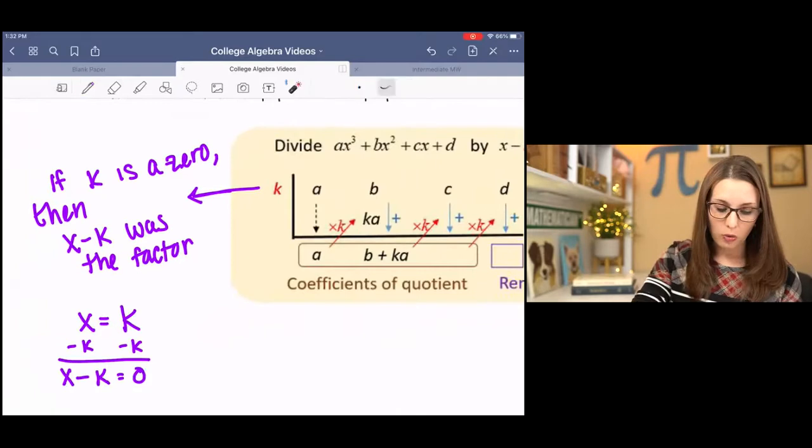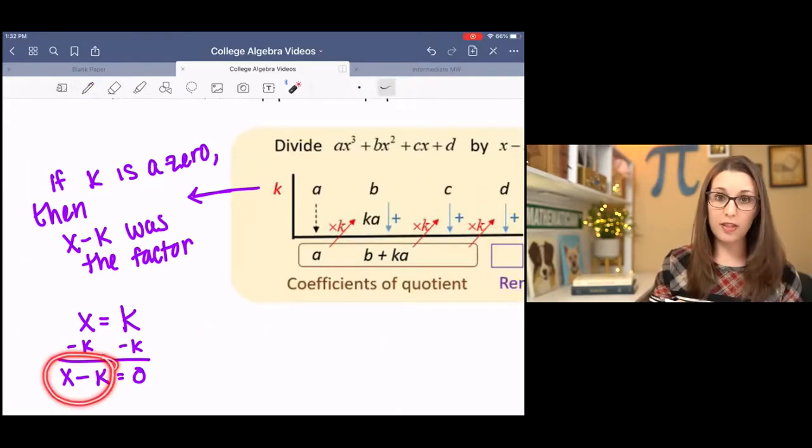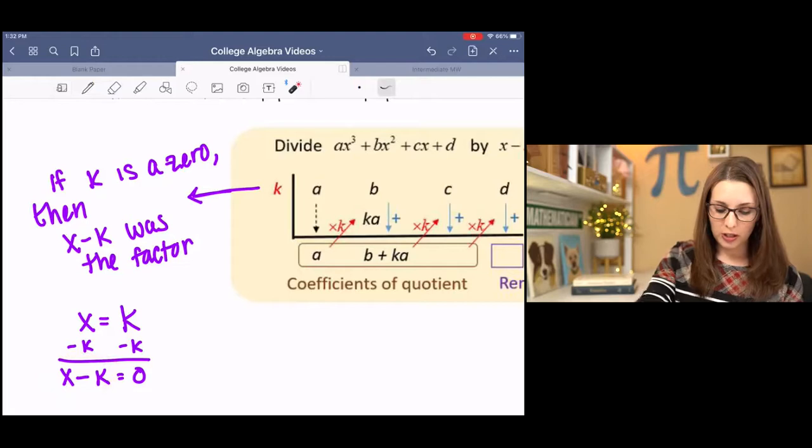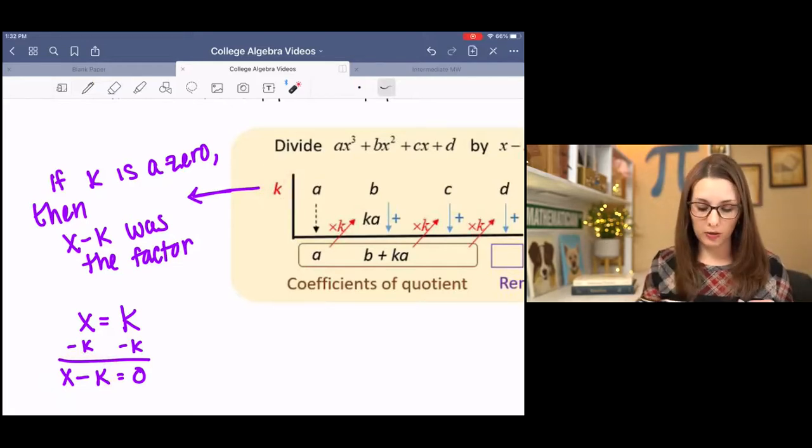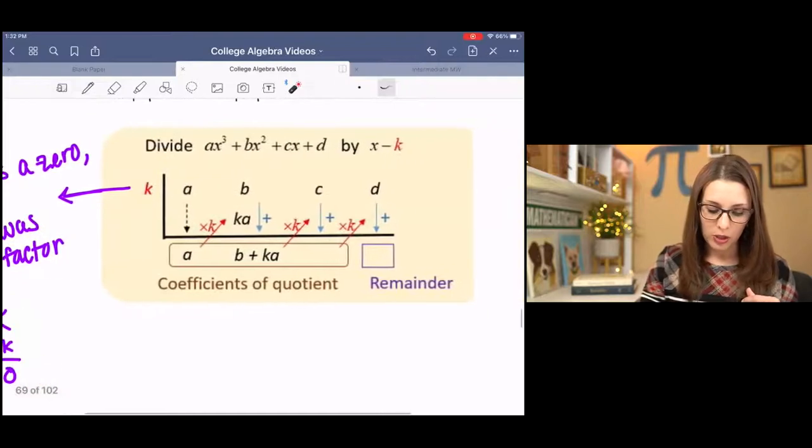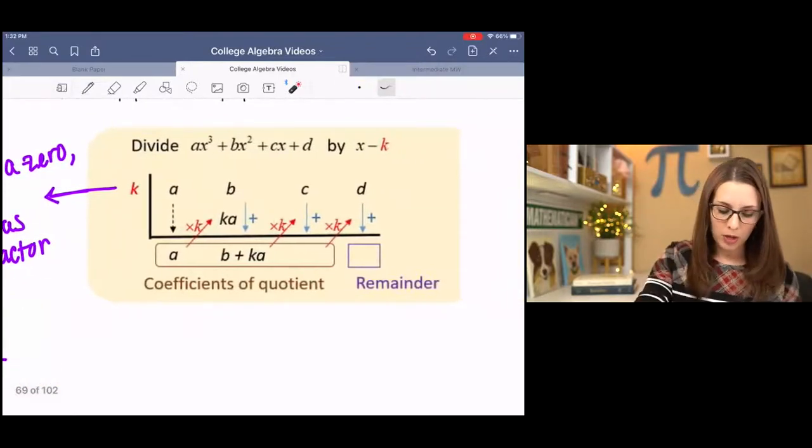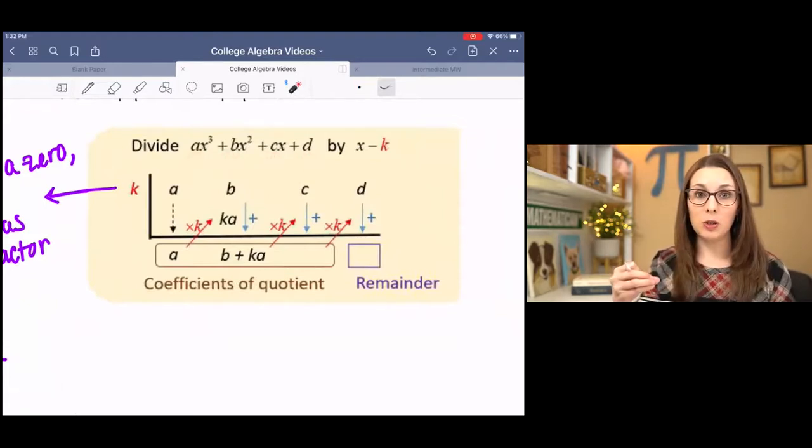So if you're starting with the factor, then you need to figure out what zero we're using for synthetic division. When you set up your little table, you use your coefficients of the polynomial when the polynomial is written in descending order.